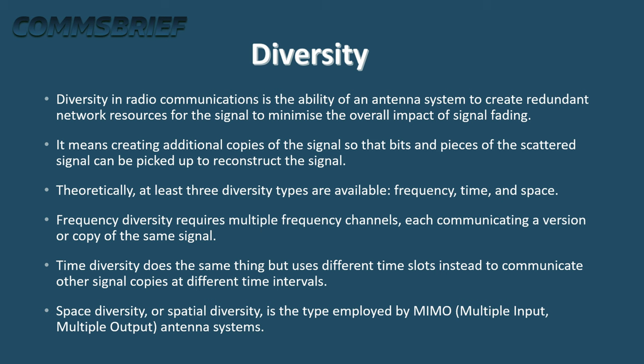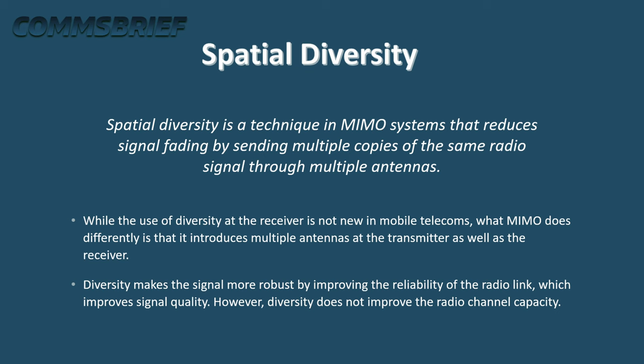Frequency diversity requires multiple frequency channels, each communicating a version or copy of the same signal. Time diversity does the same thing but uses different time slots instead of different frequency channels to communicate other signal copies at different time intervals. Space diversity, or spatial diversity, is the type employed by MIMO — multiple input multiple output — antenna systems. Spatial diversity is a technique in MIMO systems that reduces signal fading by sending multiple copies of the same radio signal through multiple antennas.